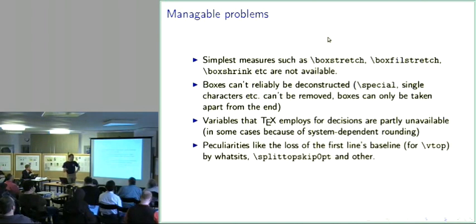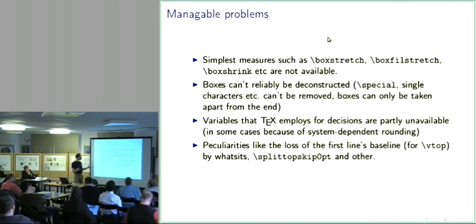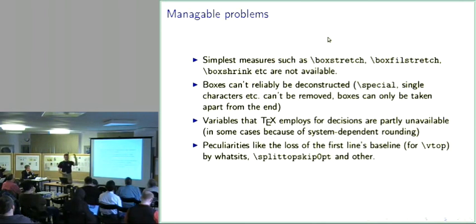There are peculiarities when building lists: the first line's baseline in a vtop box is ruined if you start with a whatsit like a write statement or a mark. It also gets lost if you do a vsplit operation — the usual way to manually split a large box into smaller boxes — because a top skip is put at the top of the resulting box, and as a result the baseline of the first line is also lost.